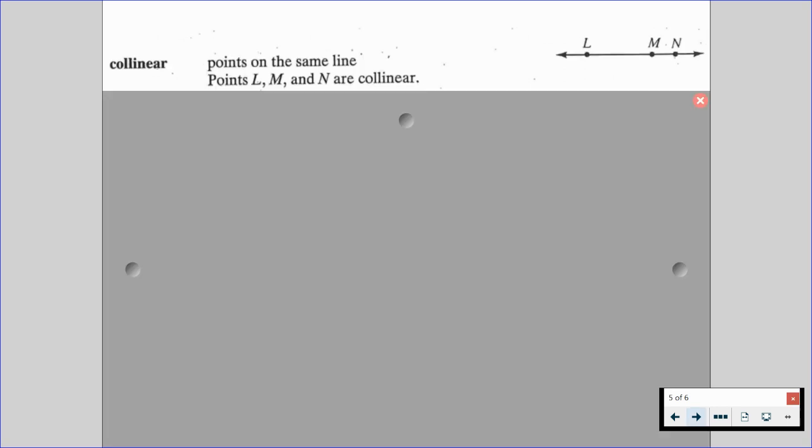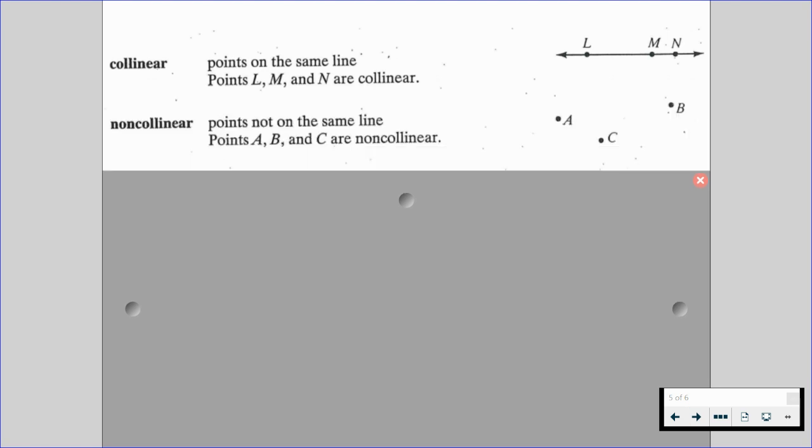We have the phrase collinear. To be collinear is points on the same line. So looking at the diagram to the right points L, M, and N are collinear. Those three points are on the same line. We also have non-collinear. That's when points are not on the same line. So points A, B, and C to the diagram to the right are non-collinear because they are not on the same line.